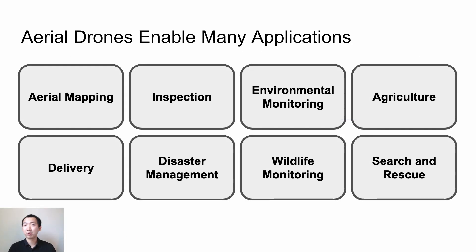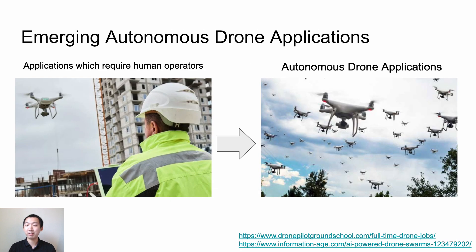Small aerial drones have already enabled many applications, such as aerial mapping, facility inspection, and search and rescue. Many of those applications are shifting from traditional applications, which require human operators, to the emerging autonomous applications, which are often powered by machine learning and can perform complicated tasks in an autonomous way.